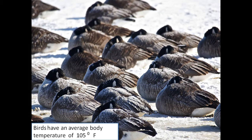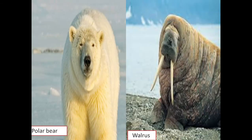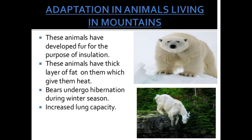Birds are warm-blooded. Polar bears and walruses are also warm-blooded mammals. Animals that live in cold mountain environments have developed fur on their body for insulation, and a thick layer of fat which provides heat insulation. Bears also undergo hibernation during winter — when it gets very cold, they sleep for a long time.